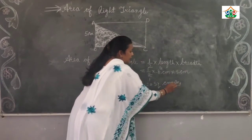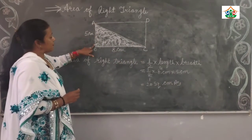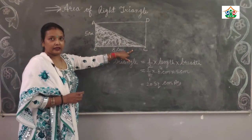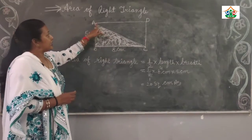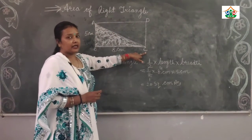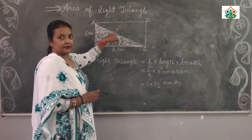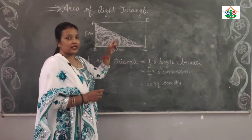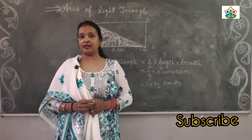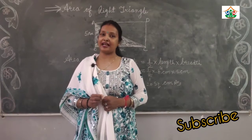This is the area of triangle ABC right angle triangle. The area of triangle ADC right angle triangle is equal to ABC. I think you have understood. Thank you, have a nice day.